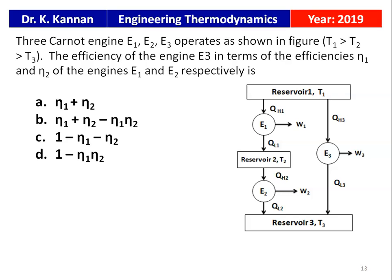Again from the 2019 question paper. Three Carnot engines E1, E2, E3 operate in series where T1 > T2 > T3. The efficiency of engine E3 in terms of η1 and η2 is: A) η1 + η2, B) η1 + η2 − η1·η2, C) 1 − η1 − η2, or D) 1 − η1·η2. The correct option is B: η1 + η2 − η1·η2.